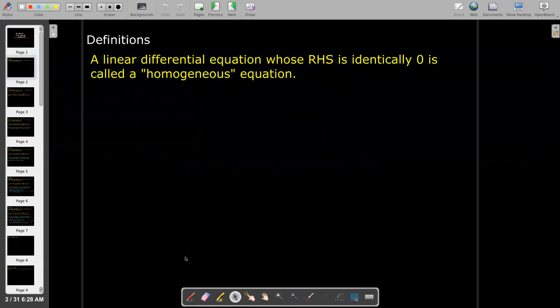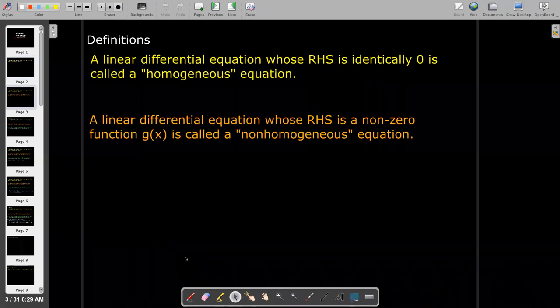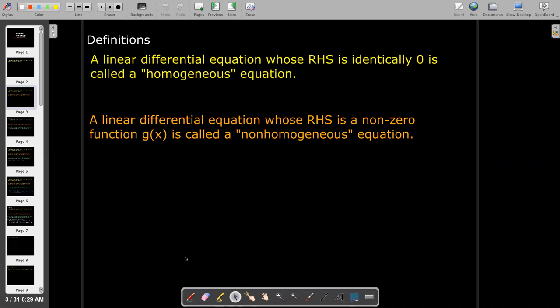So let's go through some definitions. What is a homogeneous equation? It's a differential equation where the right-hand side, when you write it in standard form, is identically zero. If instead of having zero we have a function of x, we call that a non-homogeneous equation.